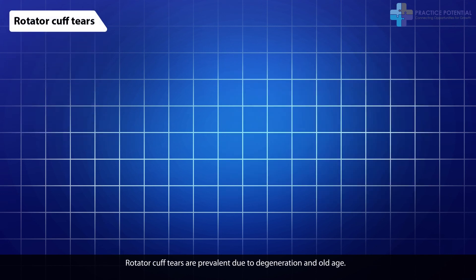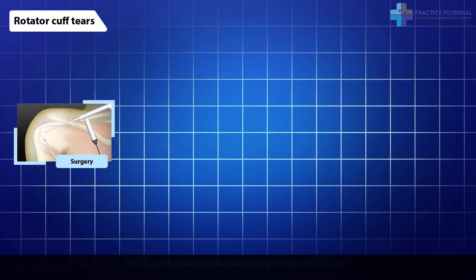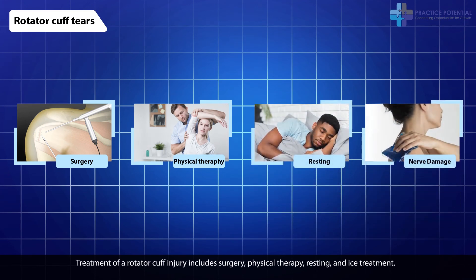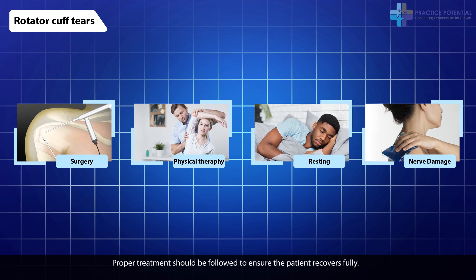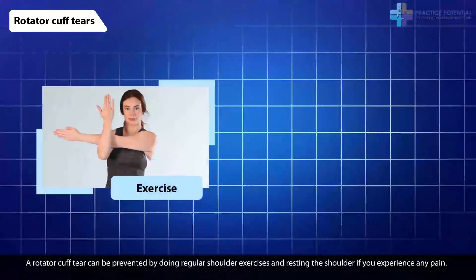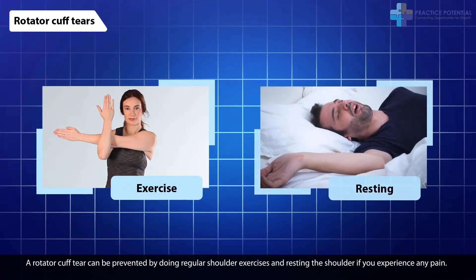Rotator cuff tears are prevalent due to degeneration and old age. Treatment of a rotator cuff injury includes surgery, physical therapy, resting, and ice treatment. Proper treatment should be followed to ensure the patient recovers fully. A rotator cuff tear can be prevented by doing regular shoulder exercises and resting the shoulder if you experience any pain. Always use correct posture when lifting heavy objects.